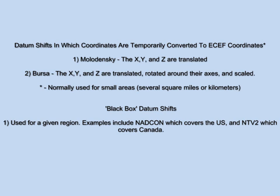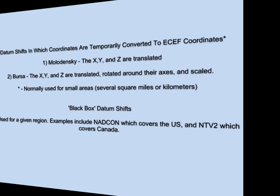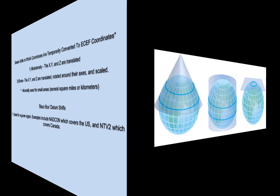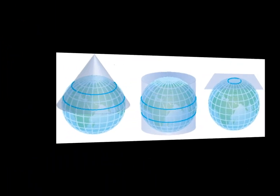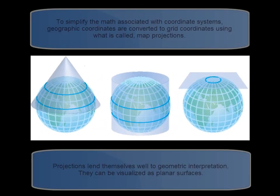Black box or interpolative datum shifts are often used for entire countries. Examples include NADCON, which covers the US, and NTB2, which covers Canada. In order to simplify the math associated with coordinate systems, geographic coordinates are converted to grid coordinates using what is called map projections.